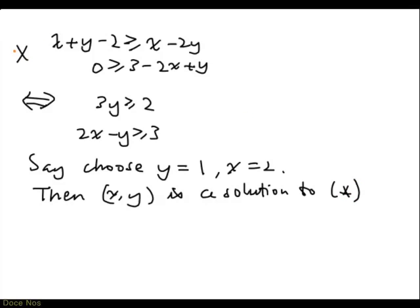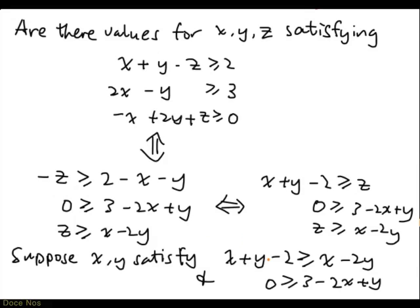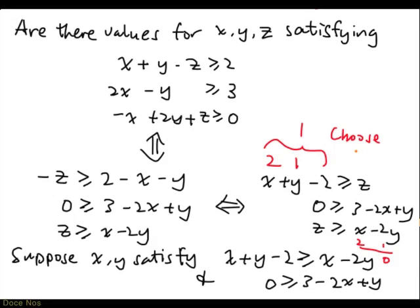So x equal to 2, y equal to 1 is a solution to the two-variable system. Now, going back to find z: with x equal to 2 and y equal to 1, the upper bound x plus y minus 2 equals 1, and the lower bound x minus 2y equals 0. So I can choose z to be anything between 0 and 1 — we'll choose z equal to 1.